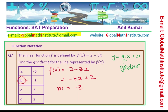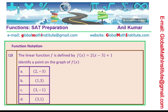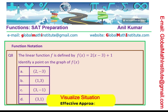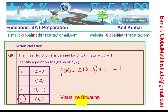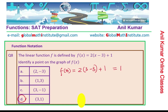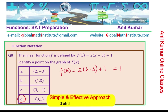Question number 8. The linear function f is defined by f of x equals 2 times x minus 3 plus 1. Identify a point on the graph of f of x from four given options. We substitute the x value and check whether we get the same y value as the coordinate point. Two options have x equals 3, so let's try f of 3: 2 times 3 minus 3 is 0, plus 1 gives 1. So the point is (3, 1), which is option D. In multiple choice, selecting a strategic point saves critical time.